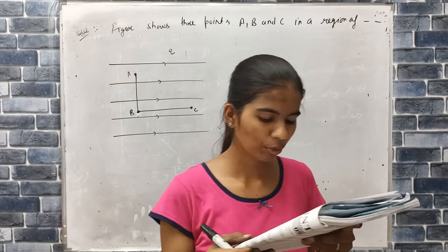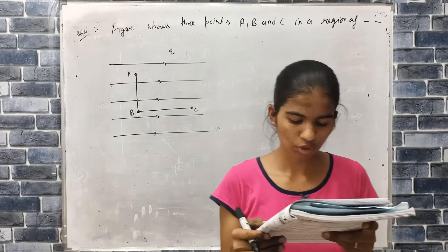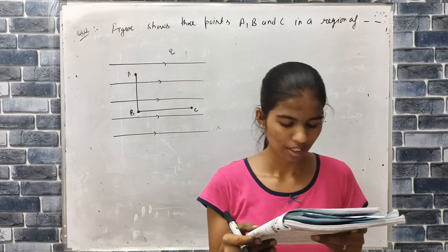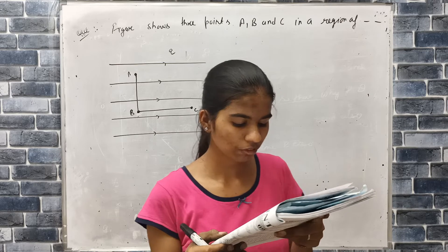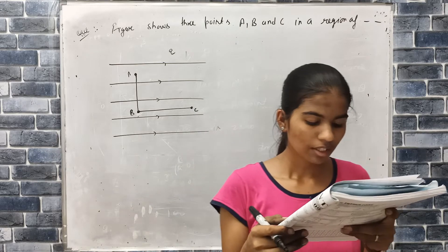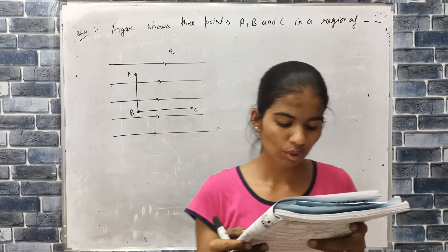Question: Figure shows three points A, B and C in a region of uniform electric field E. The line AB is perpendicular and BC is parallel to the field lines. Then which of the following holds good?